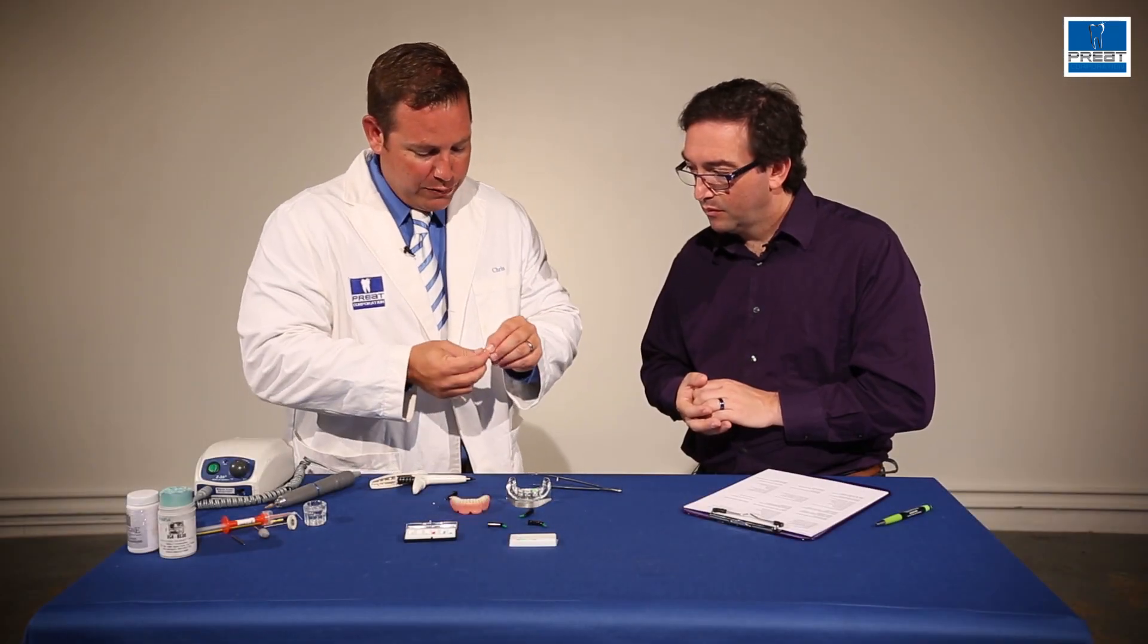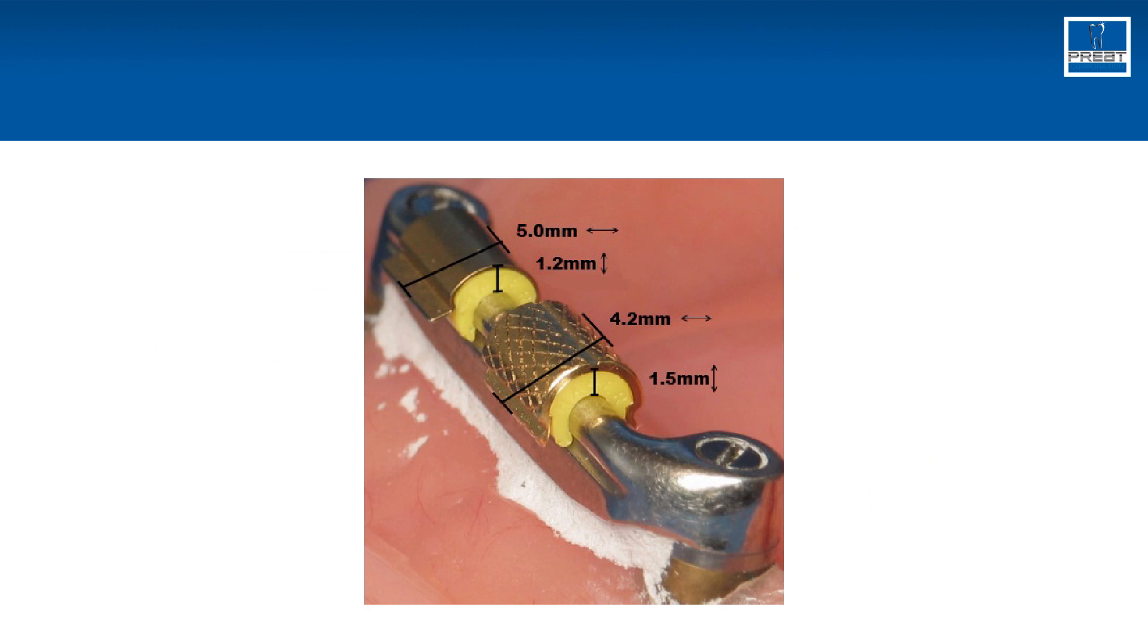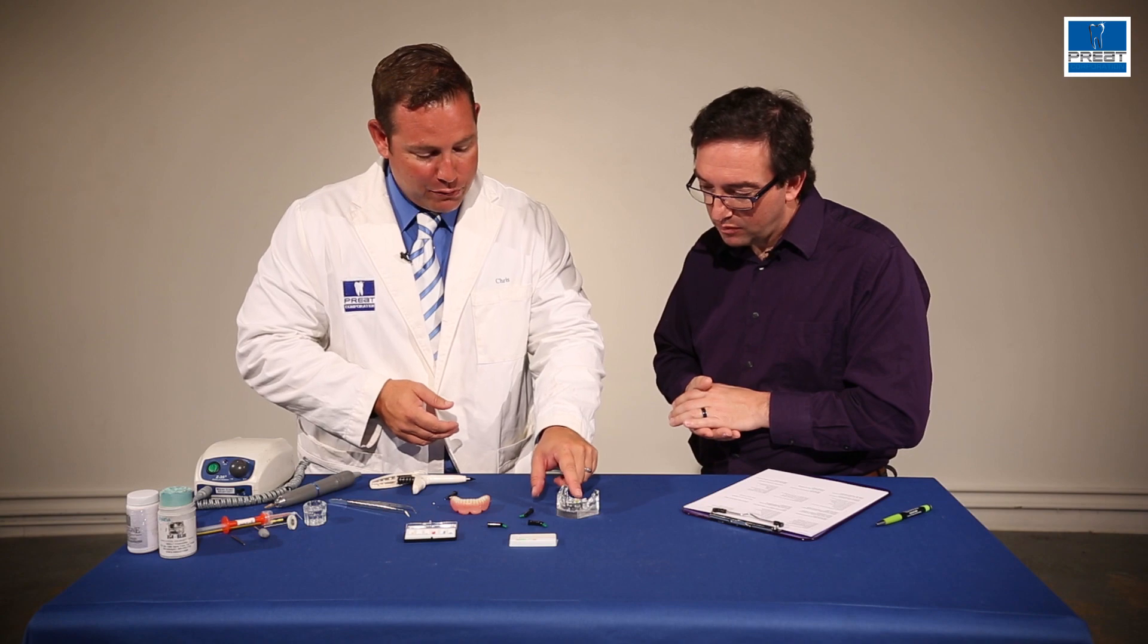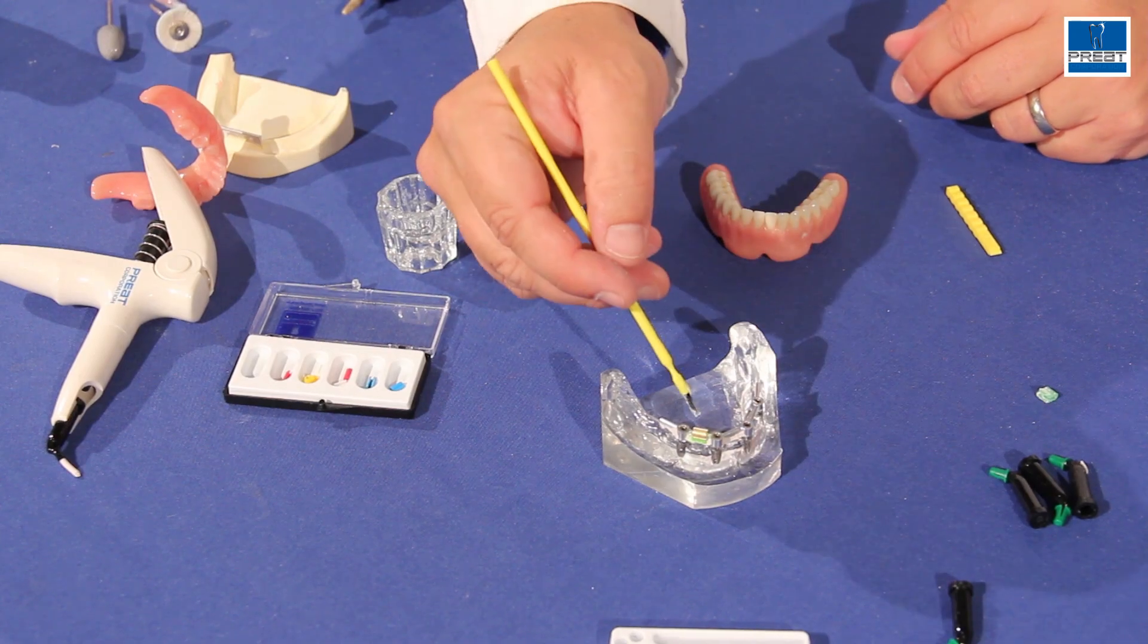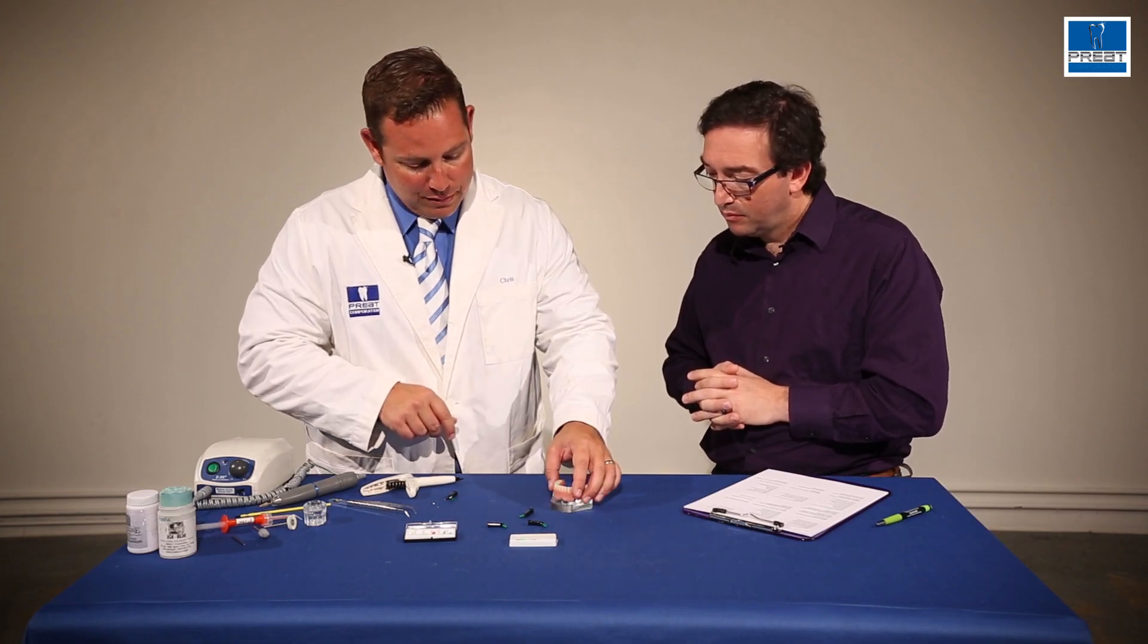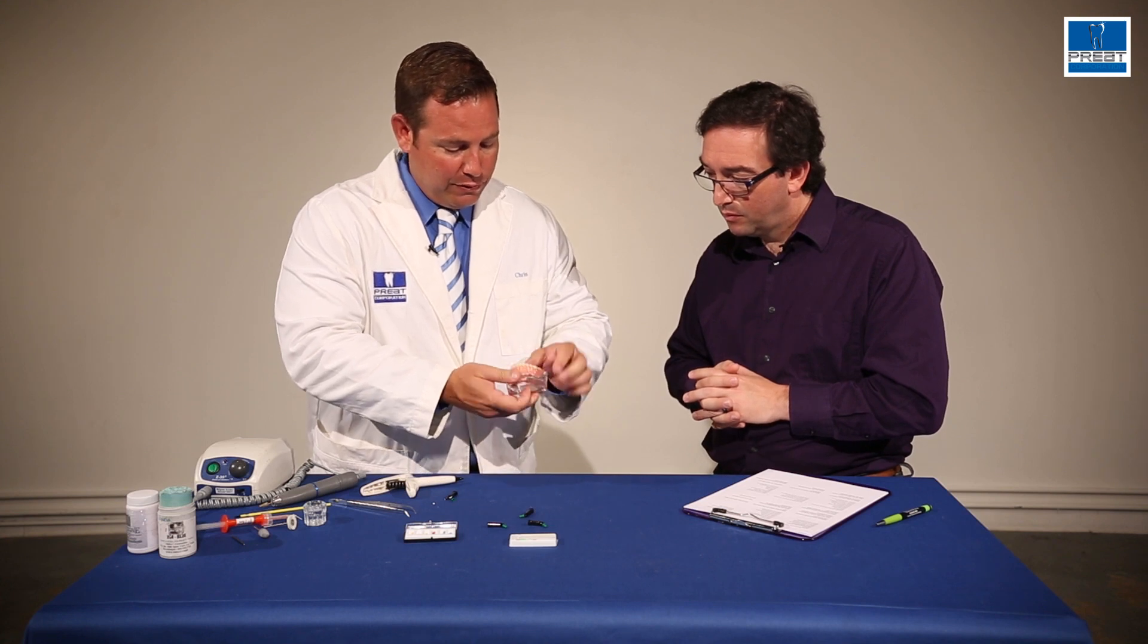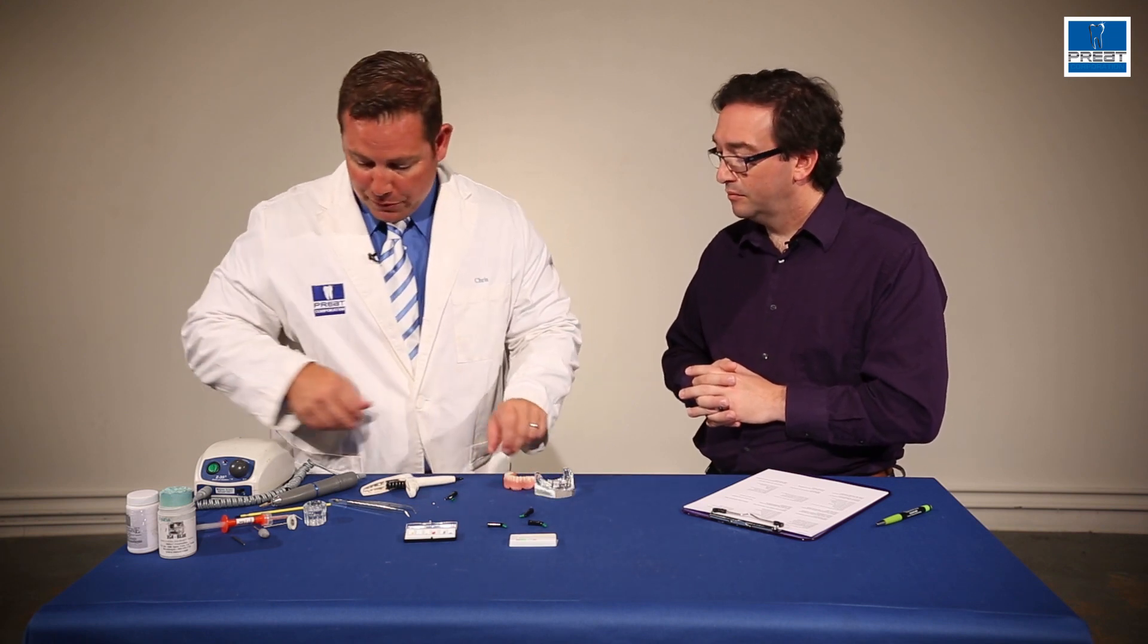Next thing I'm going to do is I'm going to take a housing. We have two different styles of the metal housings. One has longer wings. So now that I have the housing on top of the green processing clip, I have my blockout done. To chemically activate the top of that housing and get a better cure, I'm just going to paint a little bit of monomer on top of the housing. And the monomer is going to activate. While I let that dry, what I'm going to do is I'm going to seat my prosthesis down, make sure it can seat, there's no premature contact.